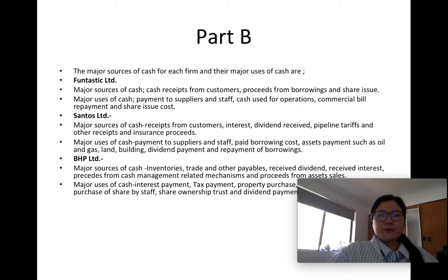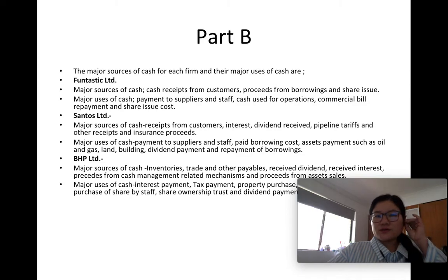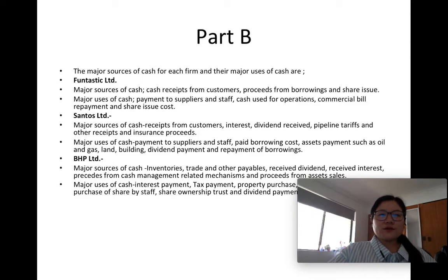In Part B, the major sources and uses of cash for each firm are as follows. For Fantastic Limited, major sources of cash are cash receipts from customers, proceeds from borrowings, and share issues. Major uses of cash for Fantastic Limited are payments to suppliers and staff, cash used for operations, commercial bill repayments, and share issue costs.